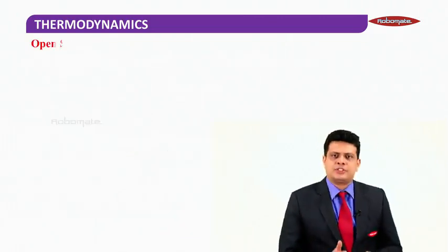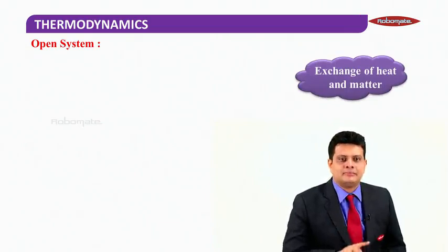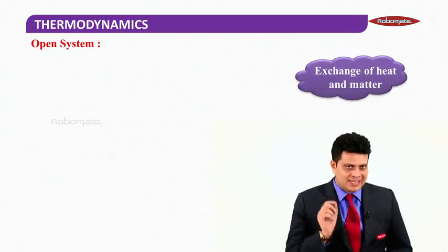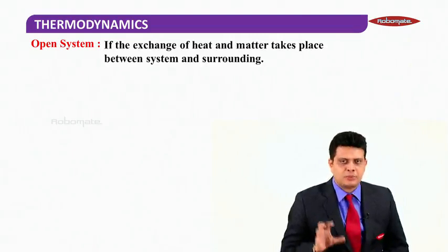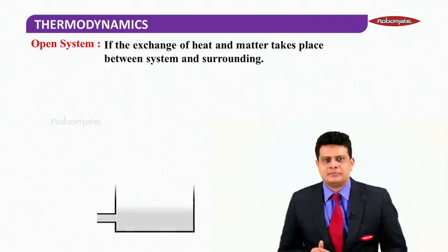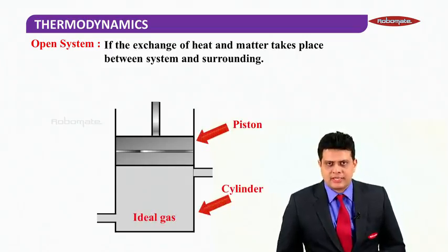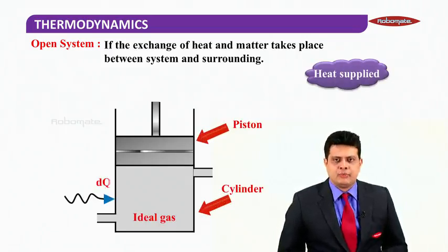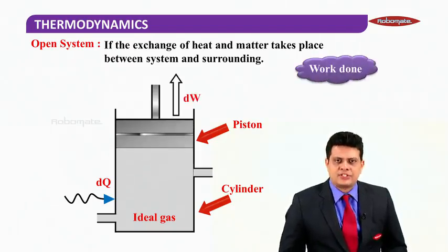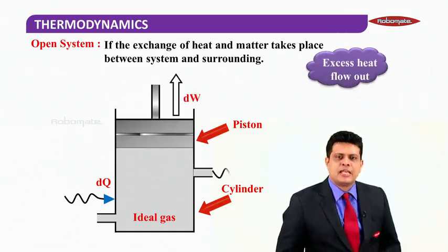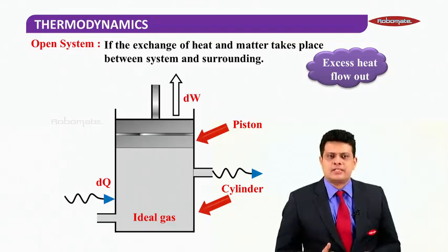Now, what do you mean by an open system? An open system involves exchange of both heat energy and matter between the system and surroundings. If exchange of heat and matter takes place between system and surroundings, we call that an open system. Look at this piston and cylinder with gas — when you supply heat energy the gas expands, work is done, and excess heat energy goes out. There is exchange of both heat energy and matter, so this is an open system.